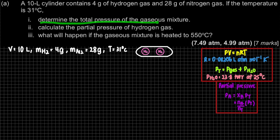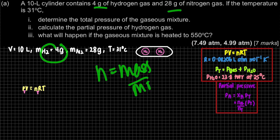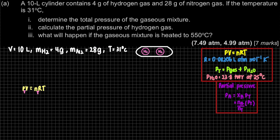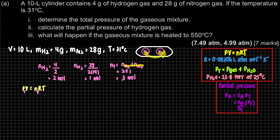To determine the total pressure using PV = nRT, the pressure P must be the total pressure, so the number of moles n must also be total. We need to find the total number of moles using n = mass / molar mass. We find moles for H₂ and for N₂ separately. Remember, hydrogen's molar mass is 2 g/mol (H₂) and nitrogen's is 28 g/mol (N₂). Once we add them up, we get a total of 3 moles.